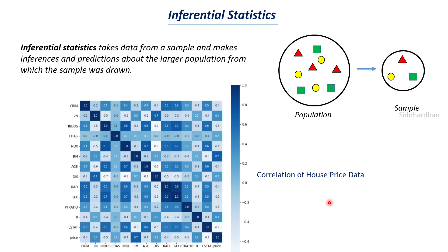Once we get these insights, we can also make future predictions using analysis like regression analysis to find what the price of houses might be. We train a machine learning or statistical model on this data, and it can predict the price of a house given the input features. This is how you can get inferences from a data set and make future predictions. In summary, descriptive statistics describes and summarizes data using numerical measures like central tendency and variability, while inferential statistics finds insights and makes future predictions. I hope you understood the topics covered in this video — thanks for watching, see you in the next upload.